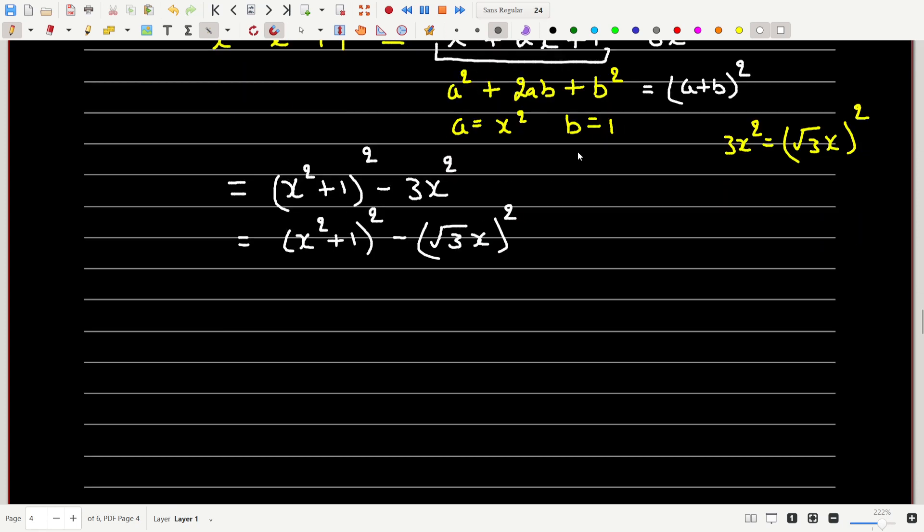Now this is of the form a square minus b square where a is equal to x square plus 1 and b is root 3x. So I can write this as x square plus 1 plus root 3x into x square plus 1 minus root 3x.